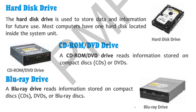The next is the CD-ROM or DVD drive. The DVD drive is used to read information from CDs and DVDs. They are also fitted inside the system unit. Next is the Blu-ray drive. The Blu-ray drive reads information stored on compact disks, DVDs, or Blu-ray disks. It can also be fitted inside the CPU system.